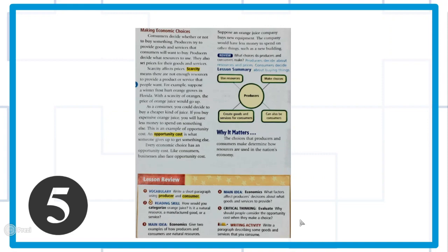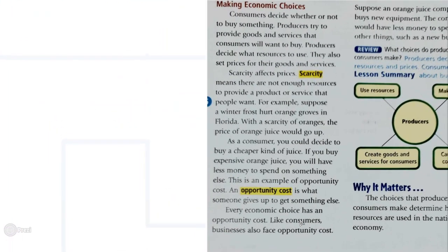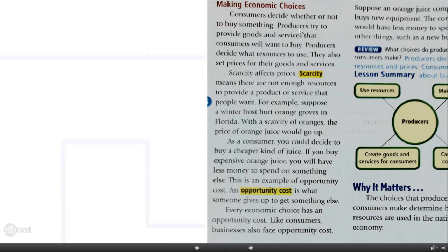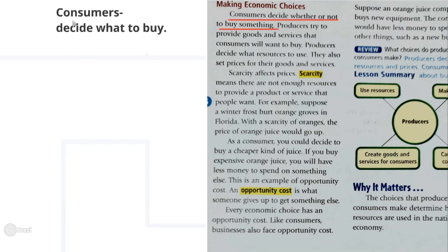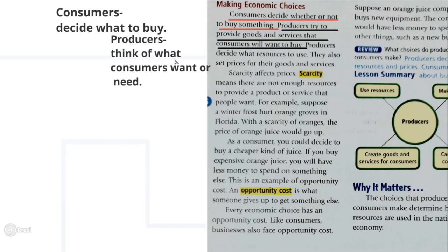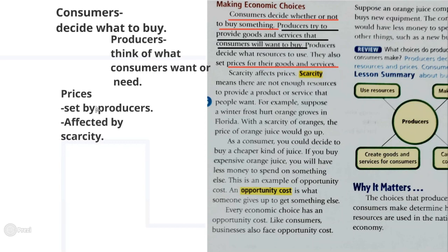On the topic of making economic choices: consumers decide whether or not to buy something. Producers try to provide goods and services that consumers will want to buy. Producers decide what resources to use and also set prices for their goods and services. As a business person, you should think about what consumers need so they will buy from you. Remember: prices are set by producers, and these prices are affected by many factors — including scarcity.